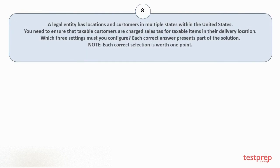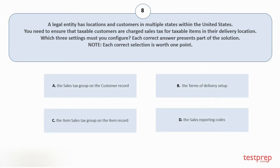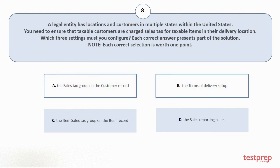Question number 8: a legal entity has locations and customers in multiple states within the United States. You need to ensure that taxable customers are charged sales tax for taxable items in their delivery location. Which three settings must you configure? Each correct answer presents part of the solution. Each correct selection is worth one point. Your options are: A. The sales tax group on the customer record. B. The terms of delivery setup. C. The item sales tax group on the item record. D. The sales reporting codes. The correct options are option A and B.